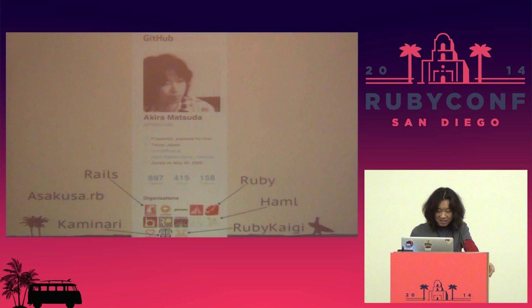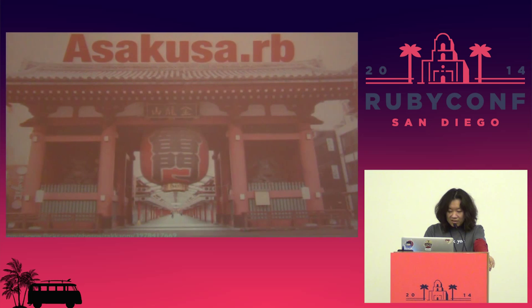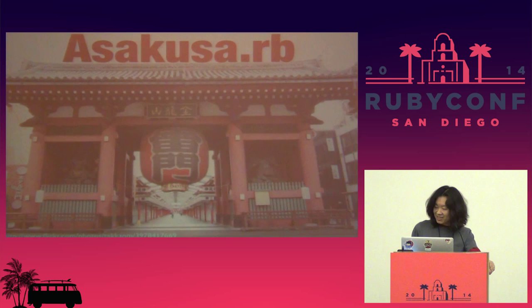Asakusa.rb is a local user group based in Tokyo. We have a weekly meetup on every Ruby Tuesday. I came to San Diego for you, so it's your turn next. Please visit us in Tokyo and come to our meetup. We'll welcome your visit.